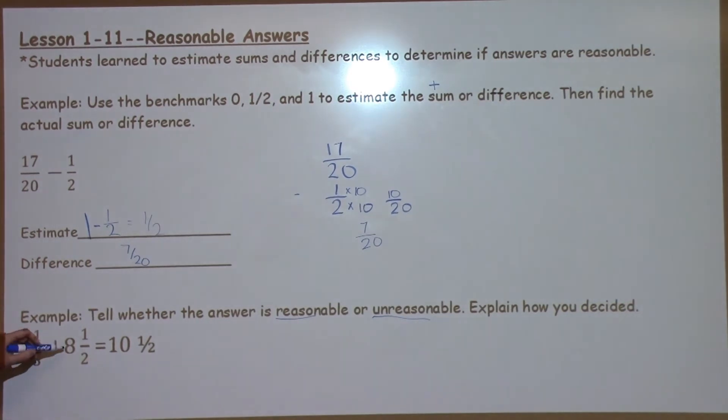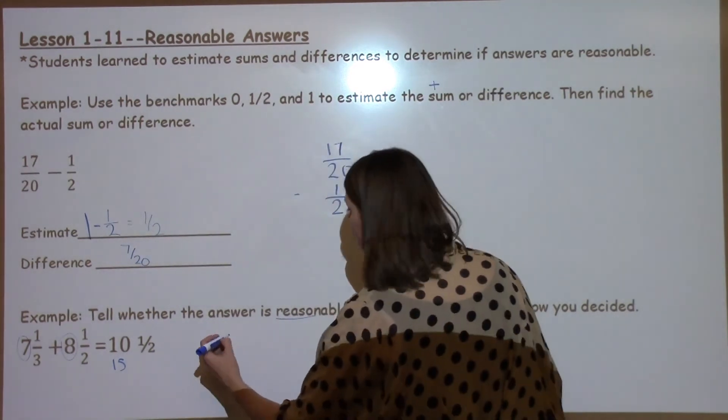I see I've got 7 and 1 third and 8 and 1 half. If I take 7 plus 8, I know that I get 15. Without even going to my fractions, I can see this is off by 5 from my whole numbers. So I already know my answer. That's too far away. My answer is not reasonable.